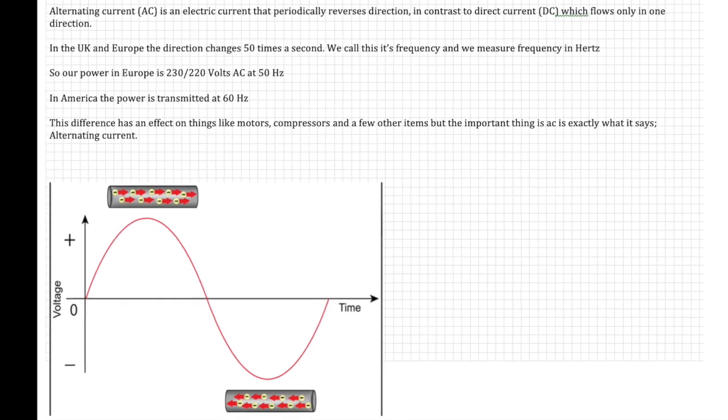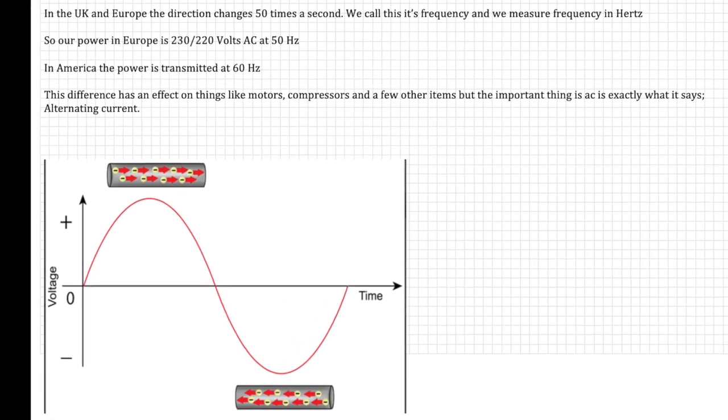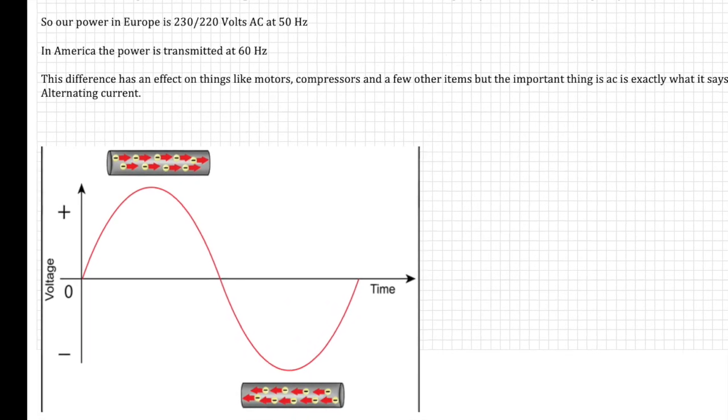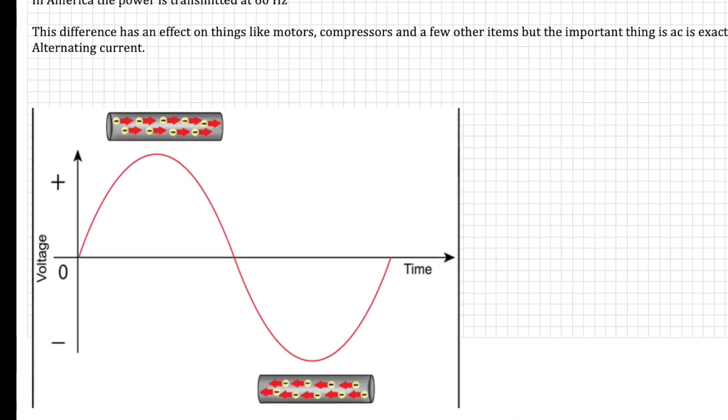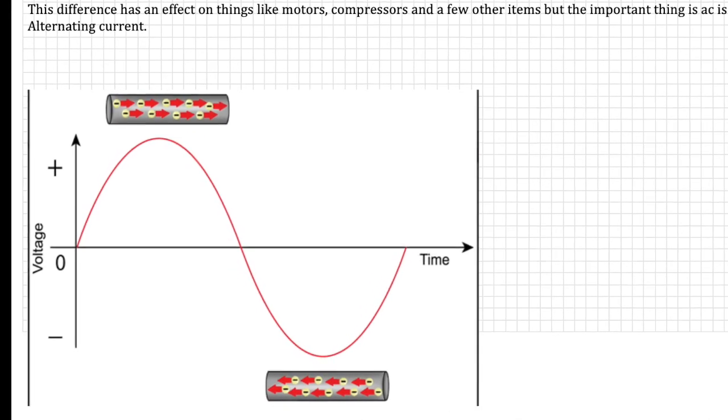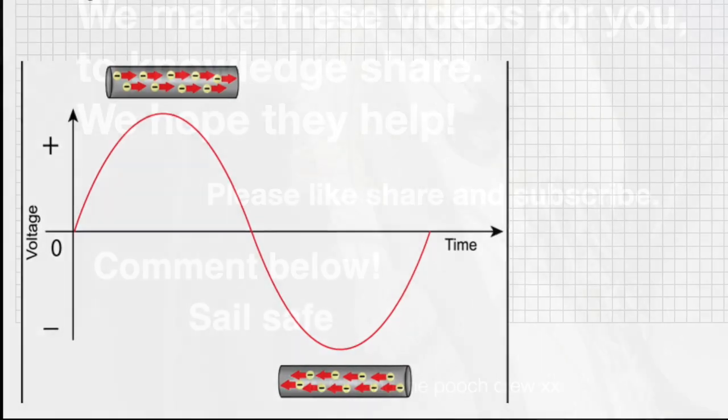So here's a cliffhanger. How do you think AC will affect a coil? How would a magnetism work? But I'll give you a clue. With AC, you can do all sorts of things with coils and magnetism. You can even change the voltage. But more about that next time.